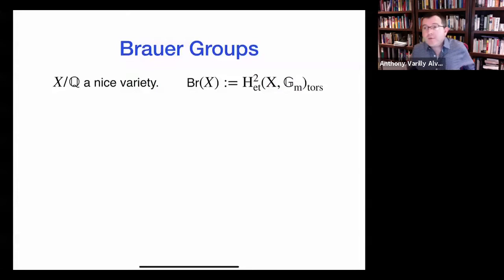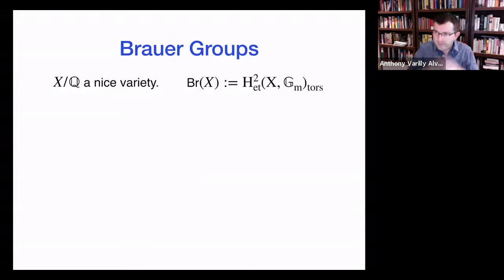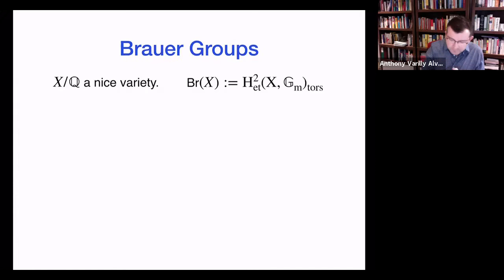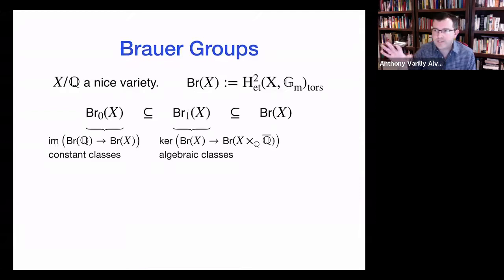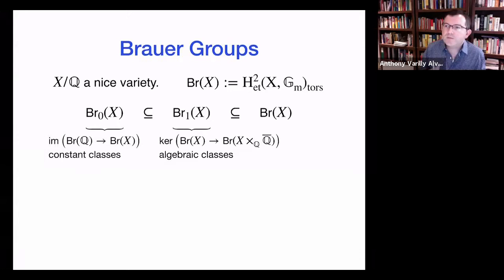Let's talk about Brauer groups. I want to focus on that piece of this conjectural picture — that the Brauer groups are finite — and try to understand a little bit about what's going on. Bianca already told us a lot about this. There's a cohomological definition of the Brauer group that generalizes the cohomological definition of the Brauer group of a field: I look at the étale cohomology H^2(X, G_m) and take the torsion bit. This is a very unwieldy thing. So one of the first things we do is chop up the Brauer group into three stages: one stage doesn't matter, one is easy to handle, and the other one is really hard.